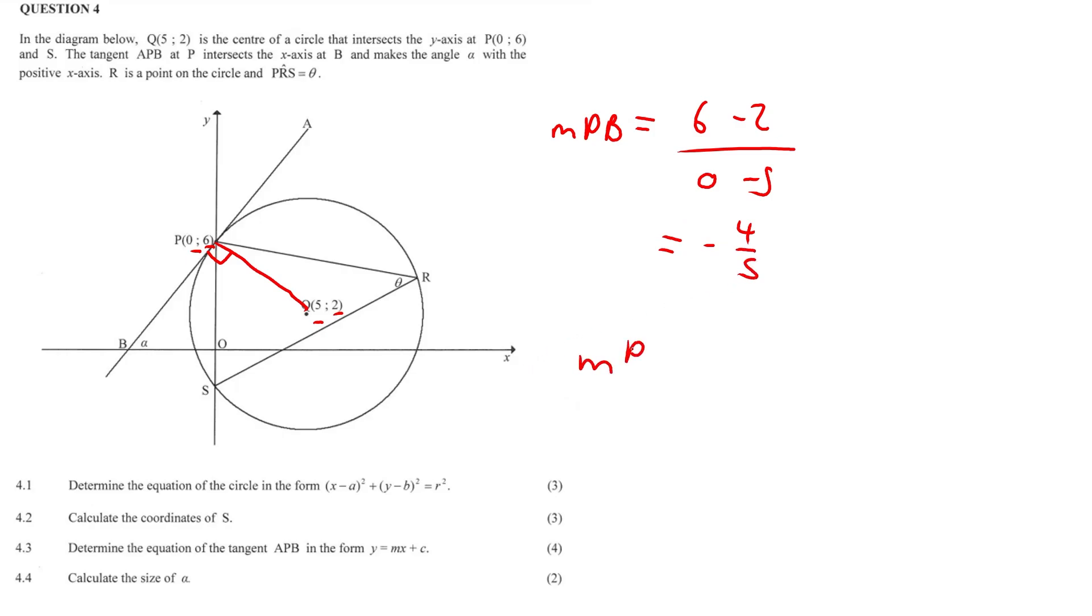But now we know that, sorry, that is MPQ. Let me just correct that. So we've got MPQ times MAB. We know that their product needs to equal negative 1. So we have negative 4 over 5 here times MAB equals negative 1. If we divide both sides by negative 4 over 5, we get 5 over 4. And that is going to be the gradient of MAB.